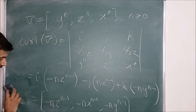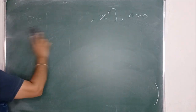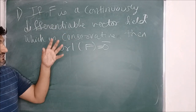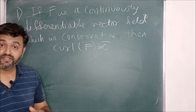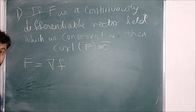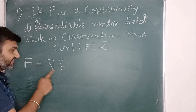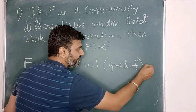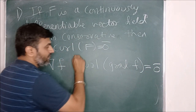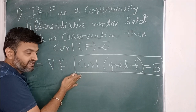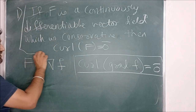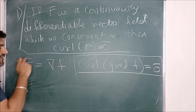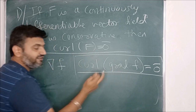Now let's look at some important properties. Finding curl is easy, but there are a couple of important properties to know. The first property says: if you have a continuously differentiable vector field that is conservative — meaning the vector field equals the gradient of a scalar function — then the curl is always zero. That is, curl of grad f is always zero. Students sometimes get confused when the problem says 'f is conservative' without explicitly writing grad f, but conservative means f equals grad f.